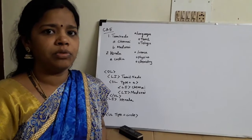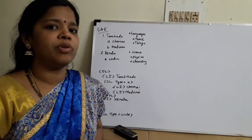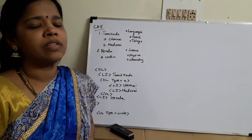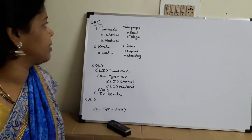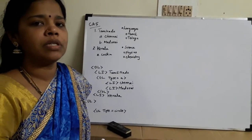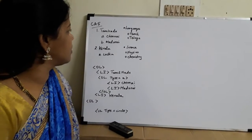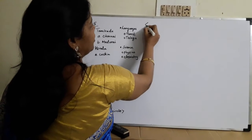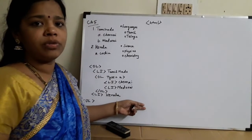Hello viewers, welcome to Knowledge Zone channel. I have already uploaded some videos for computer students — computer with commerce group and computer application students. Now we will see program number 5. This is an HTML program and we are going to use lists in HTML. If you are going to write an HTML program, you should use an HTML tag and at the last you have to put the closing tag for HTML.